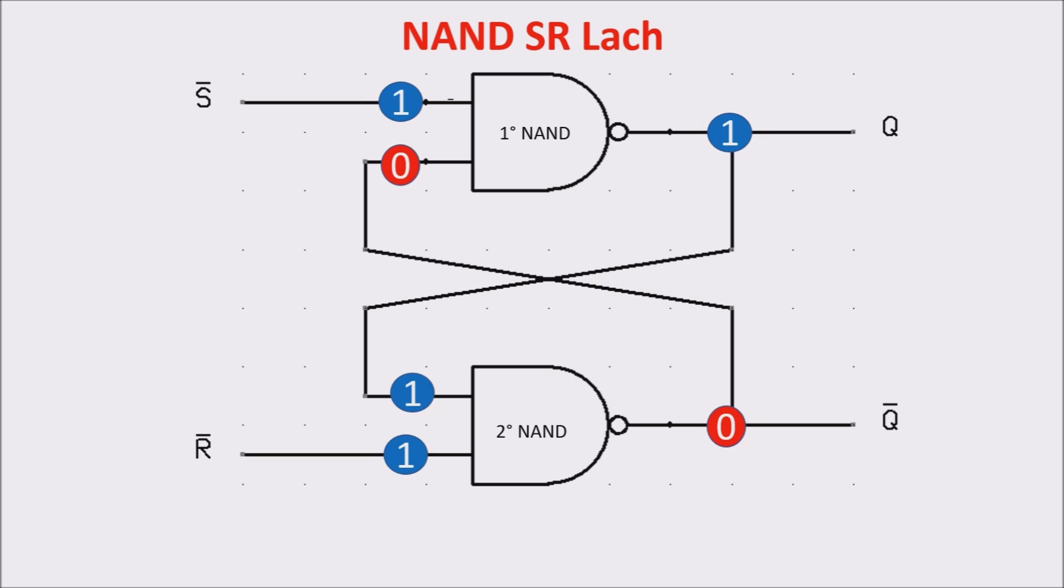If we now give a zero pulse to R, the second NAND output turns in one and immediately the first NAND, having both the inputs to one, puts the output Q to zero. So, with a zero in input R, Q is zero and not Q is one. If now input RESET switches to one, we see nothing happens. Q is still zero and not Q is still one.